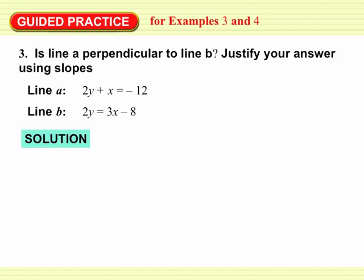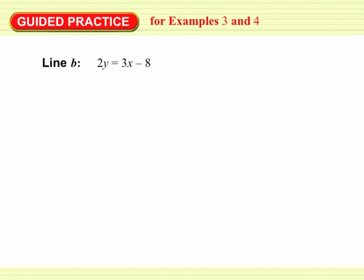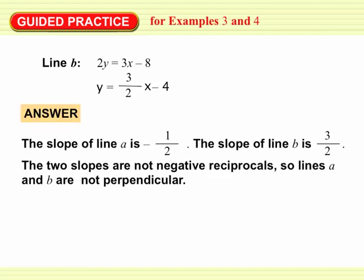Alright, so you think you've got this one. If we take line A and rearrange it into slope-intercept form, we get y equals negative 1 half x minus 6. For line B in slope-intercept form, we have y equals 3 halves x minus 4. Comparing the slopes negative 1 half and 3 over 2, those slopes are not negative reciprocals of each other, so lines A and B are not perpendicular.